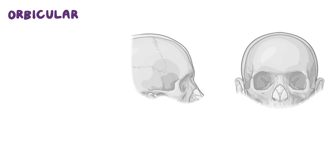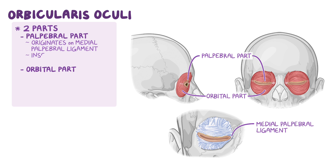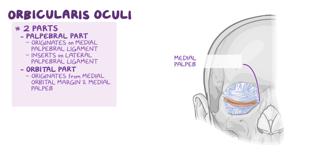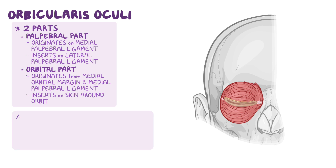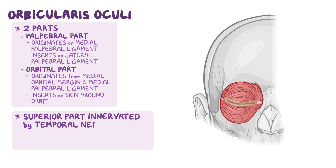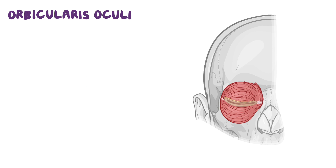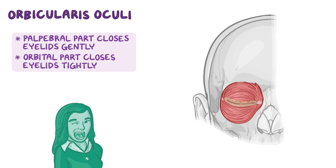Next up is the orbicularis oculi muscle, which has two main parts: the palpebral part and the orbital part. The palpebral part is found mostly within the eyelid, and it originates on the medial palpebral ligament and inserts on the lateral palpebral ligament. The orbital part originates from the medial orbital margin and medial palpebral ligament, forming a continuous ring that surrounds the orbital orifice. The superior part is innervated by the temporal nerve, while the zygomatic nerve innervates the inferior part. The palpebral part closes the eyelids gently, like when you blink or sleep, while the orbital part closes the eyelids tightly, like when you wink or squeeze the eyes shut.